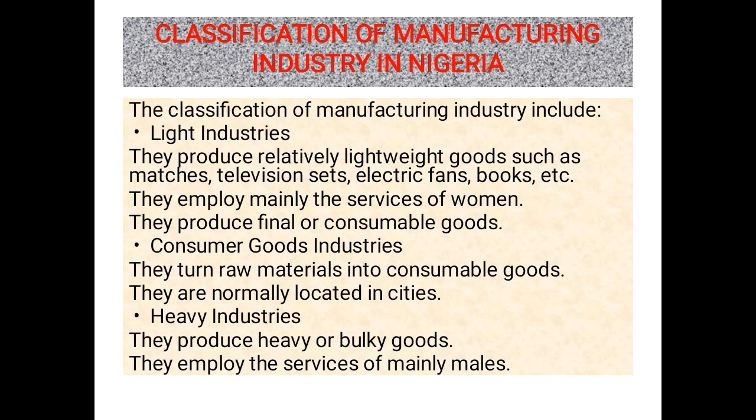The next one is the classification of manufacturing industry in Nigeria. The classification includes light industry. What is light industry? They produce relatively lightweight goods such as matches, television sets, electric fans, books, etc. They are not into massive production or scientific production — they are into light industry production.